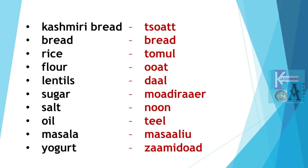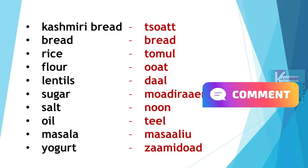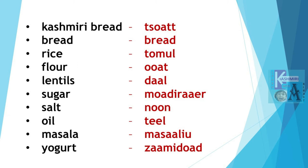Typical Kashmiri bread is Tchot; otherwise general bread is bread. Rice is Tomul. Flour is Oat. Lentils are Dal. In the next slide we will talk about all the different types of Dals.